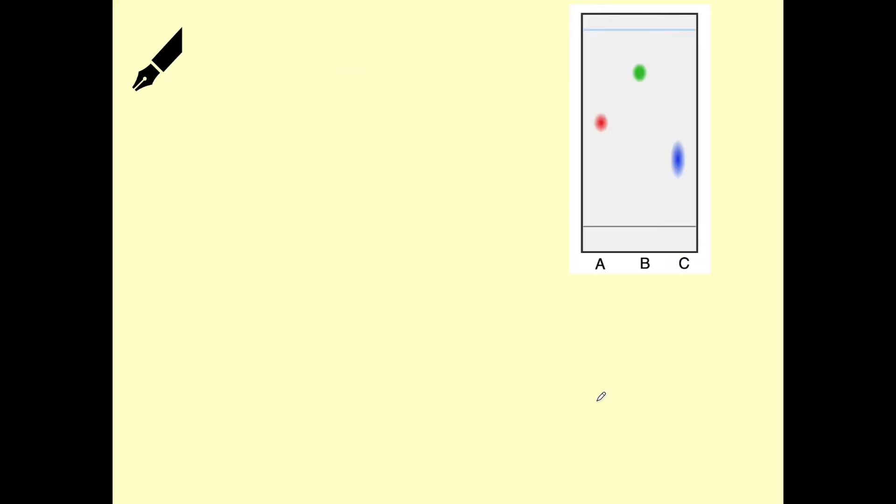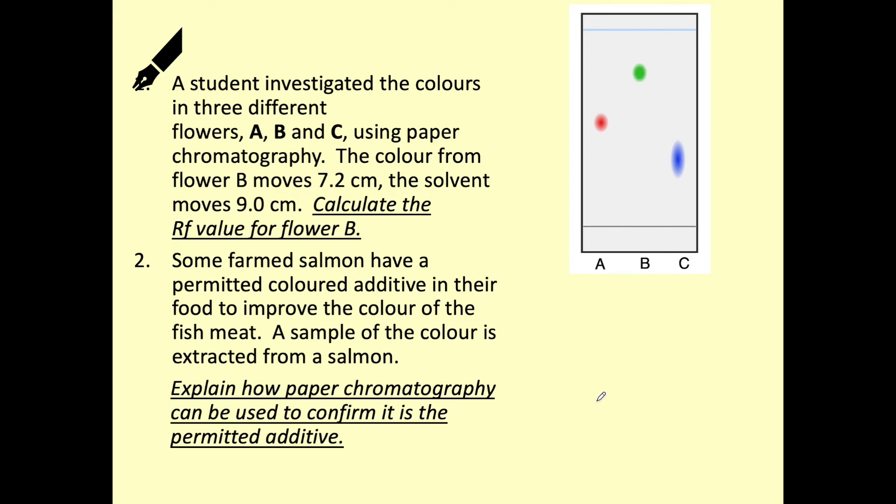Okay, so there are now a couple of example questions for how to calculate our RF values. So we're looking at how far substance B has traveled from the start line to where we can see the spot. And we're comparing that to how far our solvent has traveled.